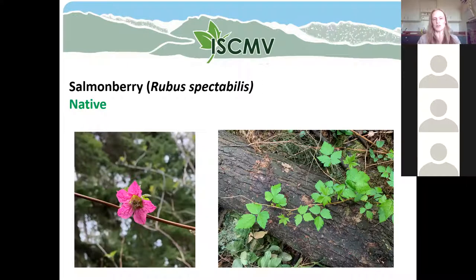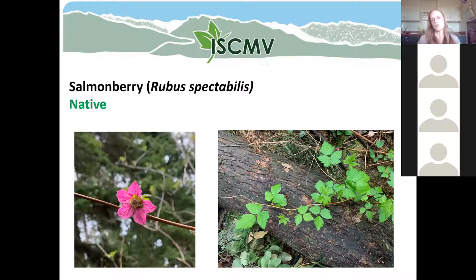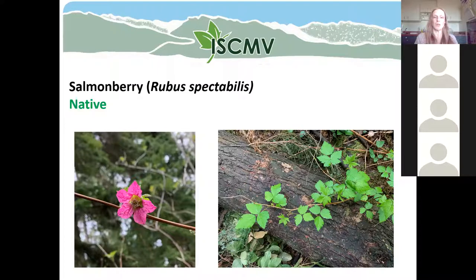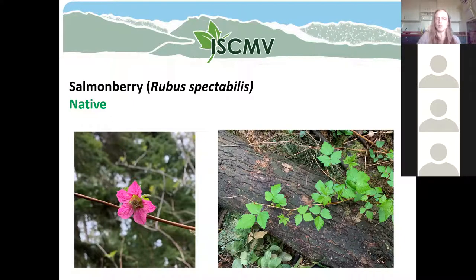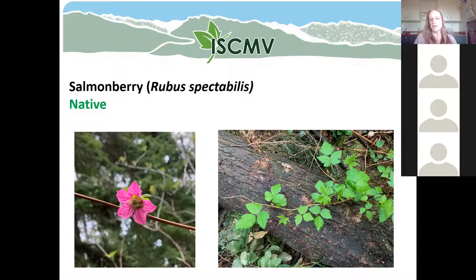Salmonberry is a native plant, similar to Himalayan blackberry in that it produces edible berries. It's a bit smaller and doesn't have thorns as big as Himalayan blackberry, but it does have very small spines. The leaves usually have three parts — one at the top and two at the bottom — which is very distinctive for salmonberry. It's a great time of year to be looking for salmonberry because they've just started flowering, with beautiful pink or fuchsia flowers. The berries will come in a few months. It's a really important species for wildlife — for habitat, nesting, and food.